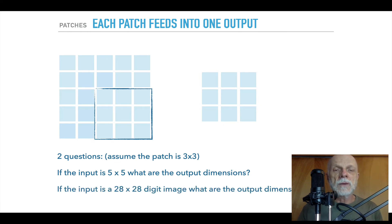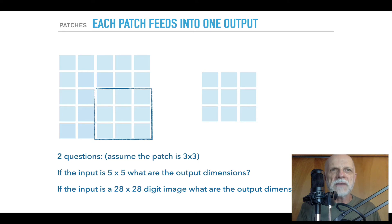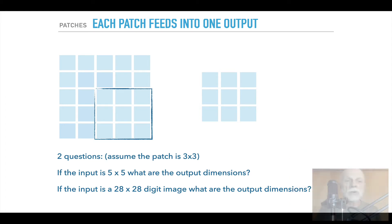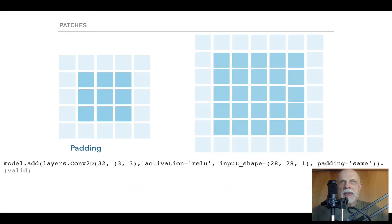What happens if we have that 28 by 28 image with a 3 by 3 patch size? The output would be 26 by 26. And if we use a 5 by 5 patch on a 28 by 28 image, that would be 24 by 24. So we see that the convolution network shrinks the original dimensions a little bit. If we don't want that, we can pad around the image — padding equals same — which allows us to keep those dimensions as we go through.